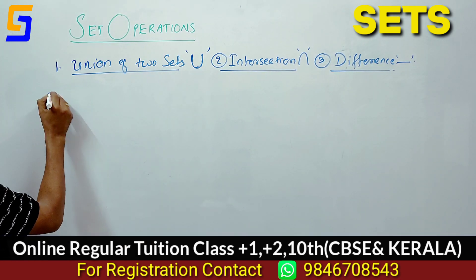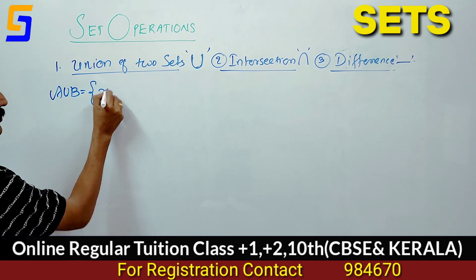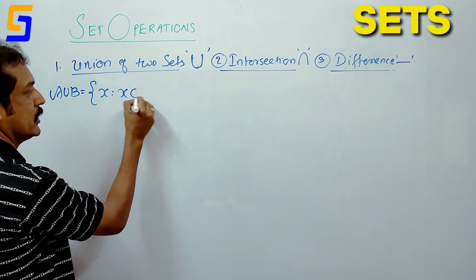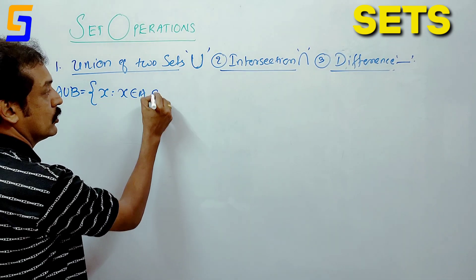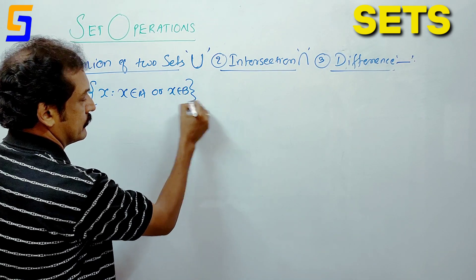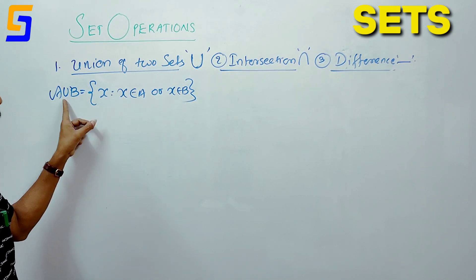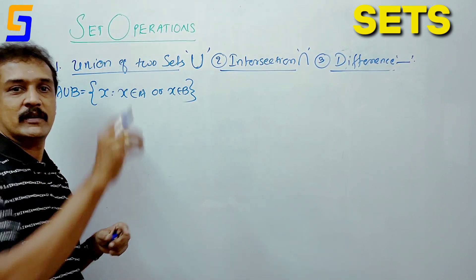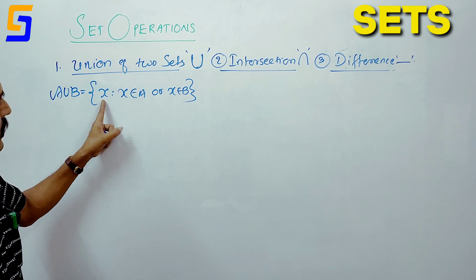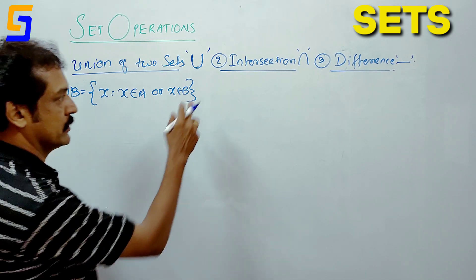First, A union B is equal to the set of all x such that x is an element of A or x is an element of B. This is the set of all x such that x element of A or x element of B.